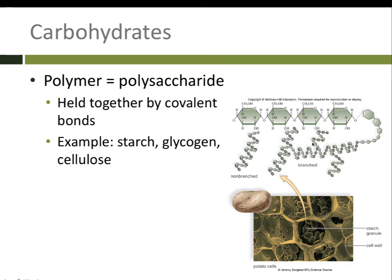With carbohydrates, sometimes the chains are branched, meaning they have little arms coming off the main chain, and sometimes they're not branched. All of the monomer subunits — the monosaccharides — are held together with covalent bonds. Some examples of carbohydrates would be starch, found in a baked potato, which is how some plants store large amounts of carbohydrates. When we eat lots of carbohydrates and don't use them immediately, we store them as glycogen — basically a way to store sugar in our body.